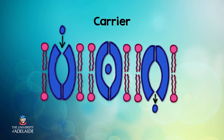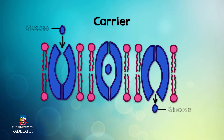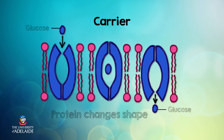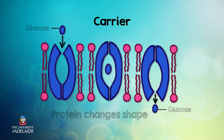Carrier proteins bind to molecules like glucose and amino acids and transport or carry them from one side of the plasma membrane to the other side. Carrier proteins often change shape as they are transporting material, but return to their original shape when the material has passed through the plasma membrane.